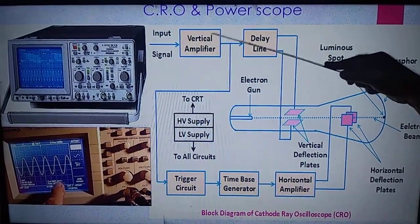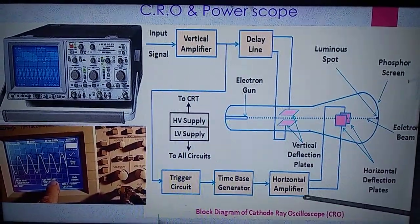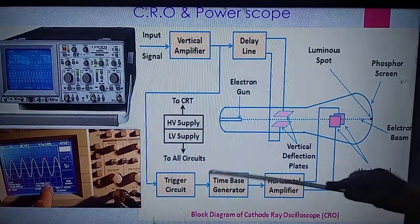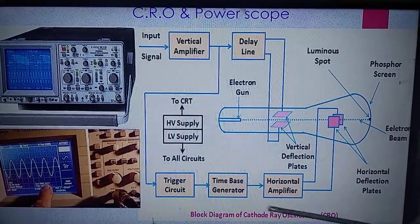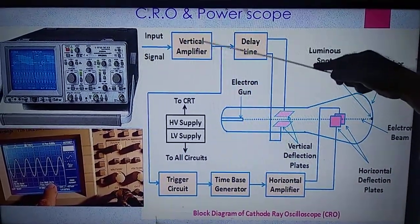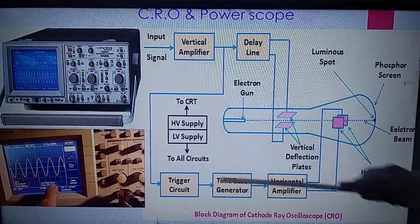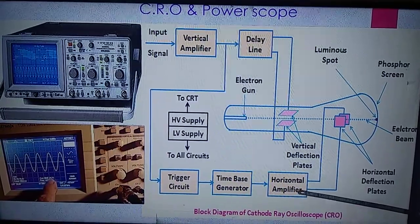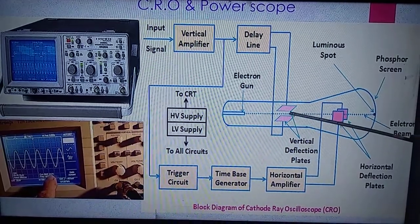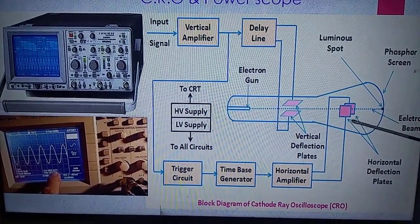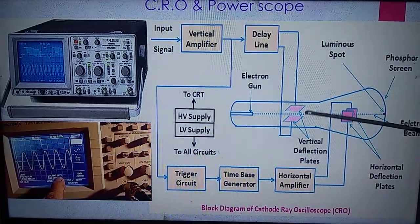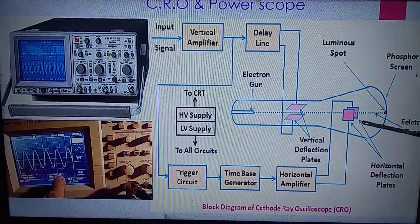The same signal after the vertical amplifier is also applied to the horizontal amplifier through the time base generator and trigger circuit. The trigger circuit stabilizes the electron beam on the phosphor screen, and the time base generator adjusts the time base used to measure frequency. The vertical amplifier amplifies the signal vertically and the horizontal amplifier amplifies it horizontally, and through the delay line this is applied to deflect the beam of electrons proportionally to both the delayed vertically-amplified signal and the triggered horizontally-amplified signal.